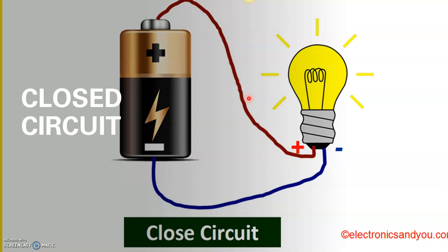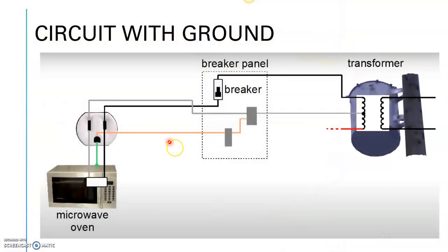This same principle applies to every electrical circuit. The negative terminal repels electrons, causing them to move through the circuit and return to the positive terminal — this is how an electrical circuit works. In every home around the world we have a hot wire, a neutral wire, and a third one: the ground wire. We'll look at the function and importance of the ground wire in the upcoming slides.